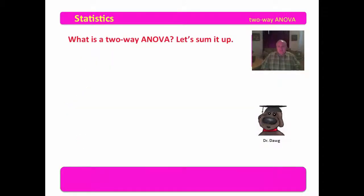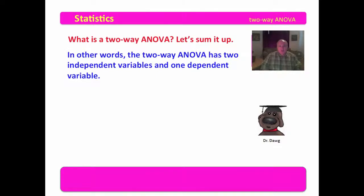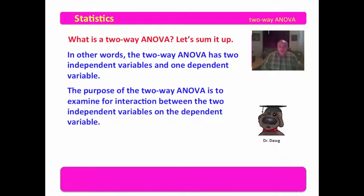To sum up: the two-way ANOVA has two independent variables and one dependent variable, while the simple ANOVA has only one independent variable and one dependent variable. The purpose of the two-way ANOVA is to examine for interaction between the two independent variables on the dependent variable.